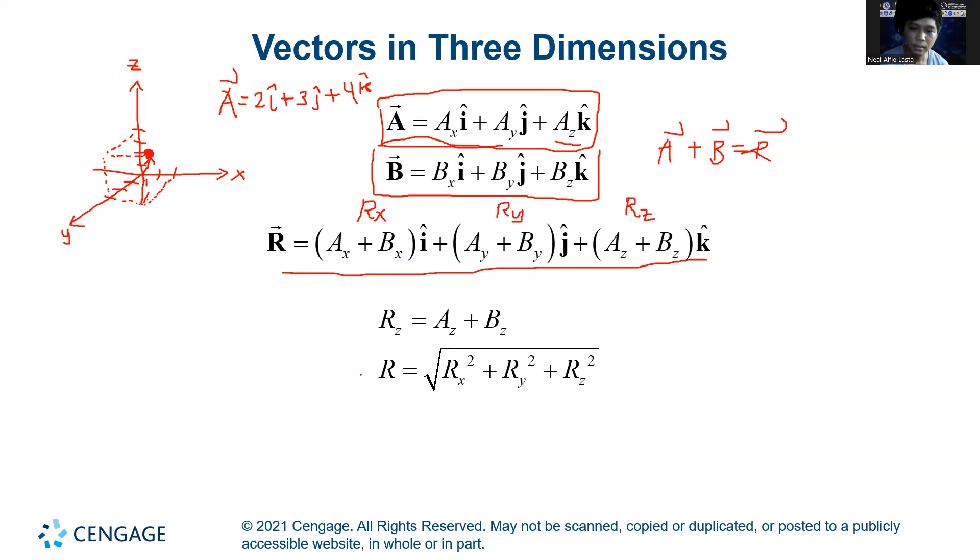And now we have an extra because this is 3D. To get the z component of the resultant, you just add all the z components, the z component of A plus the z component of B. So this is the new component we did not discuss when we talked about 2D vectors. But now that we are talking about 3D vectors, then we have to add the z component of our resultant. And now you can solve for the magnitude of our vector. Remember that the Pythagorean theorem for 2D vectors is just rx squared plus ry squared. But this time, there is another component, which is the z component. To get the magnitude, you get rx squared plus ry squared plus rz squared. So this is the 3D version of the Pythagorean theorem.